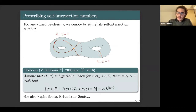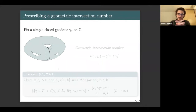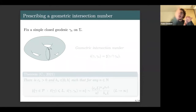Now I come to a third constraint you may want to impose on closed geodesics. We will start with a simple case. We fix a simple closed geodesic on our surface and assume it to be non-separating, meaning that if I cut my surface along this geodesic, I obtain only one piece.